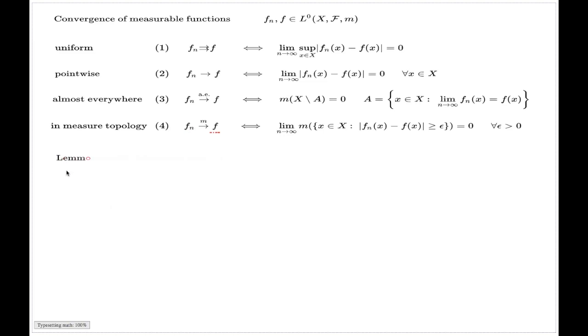Now, the simplest lemma, the simplest relation between these four types of convergences for measurable functions is given by this chain of implications. A uniform converging sequence implies pointwise convergence, which in turn implies convergence almost everywhere, which in its turn implies the convergence in measure topology. I call this implication A, I call this implication B, and I call this implication C, and that's the proof for each of them.